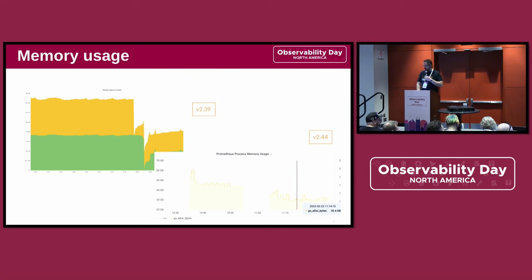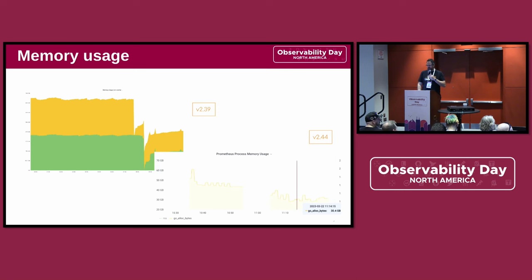Memory usage. Brian is here and will also give a talk about this later today. If you are running anything older than 2.44, you basically want to upgrade right now, or after this talk, because you will literally halve your memory usage — in particular if you have any large Prometheus instances. That's substantial.